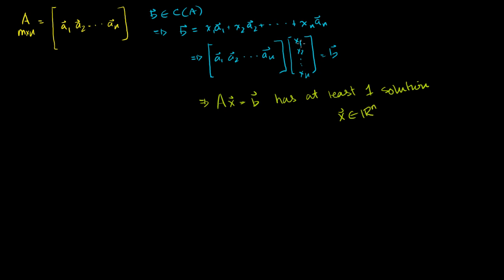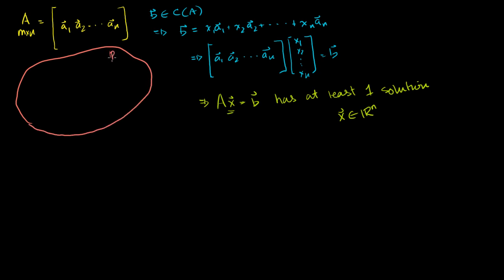The entries of x would represent the weights on the column vectors of A to get your linear combination B. This is all a bit of review. Now let's draw Rn. Any solution to this equation is going to be a member of Rn — remember, this was an m by n matrix. So let's draw Rn.